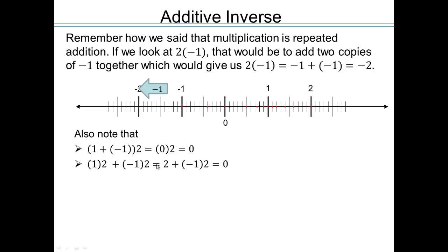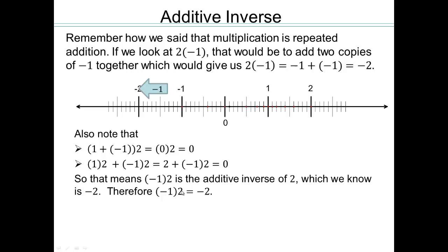We already know what the additive inverse of 2 is — negative 2 is the additive inverse of 2. So negative 1 times 2 must be negative 2, because that's the additive inverse of 2. So negative 1 times 2 is negative 2. Keep that in mind.